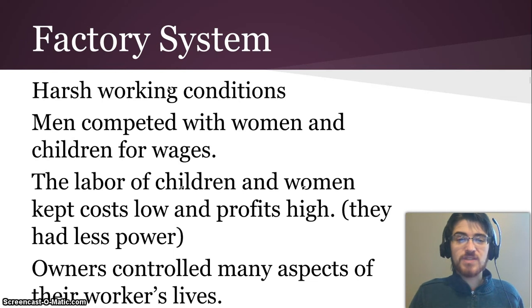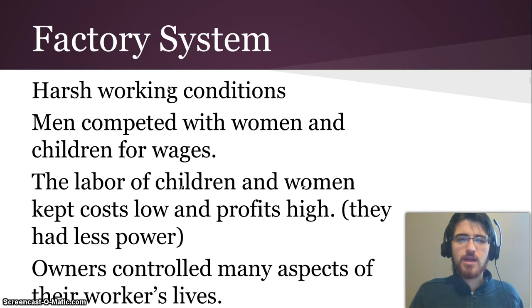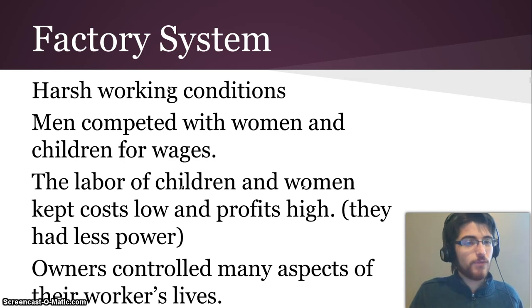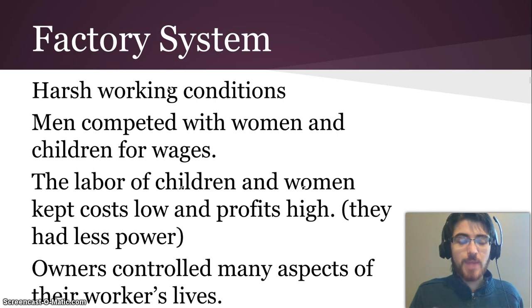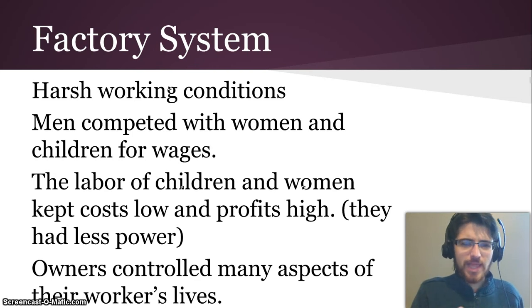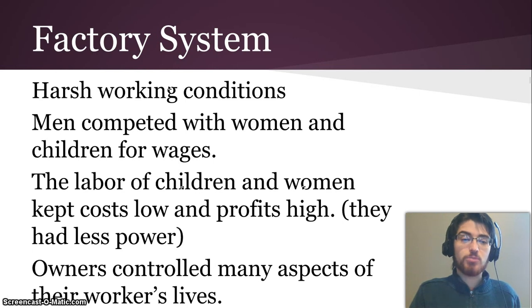There were harsh working conditions in these factories. Lots of people lost hands and fingers, people lost their sight and eyes, they got dust in their lungs. Men were competing with women and children for wages, so everyone was trying to work in the factories because you needed money to live — you were pushed off your farms, but it was horrible to work there. The labor of children and women kept costs low and profits high for factory owners, because women and children had less power in society. If they started to agitate for wages, they didn't have a lot of political clout or money of their own, so factory owners were able to exploit them.